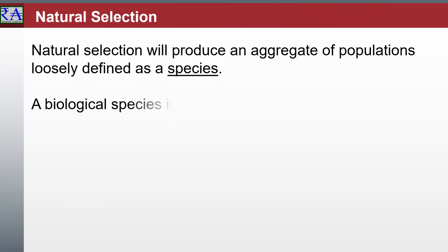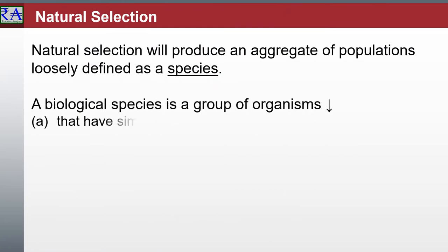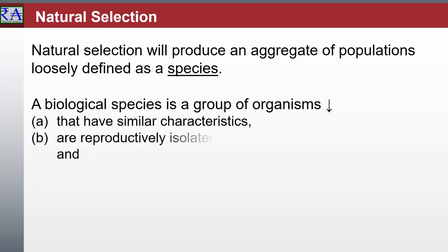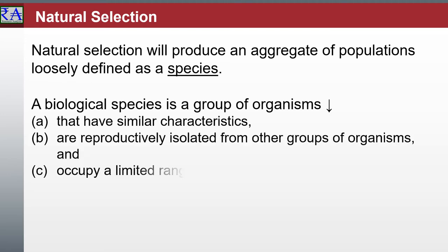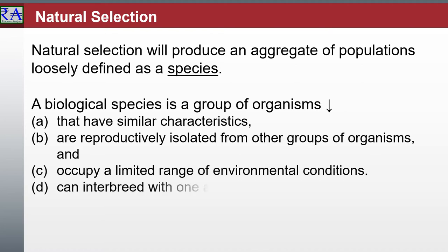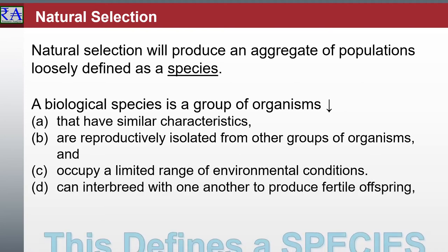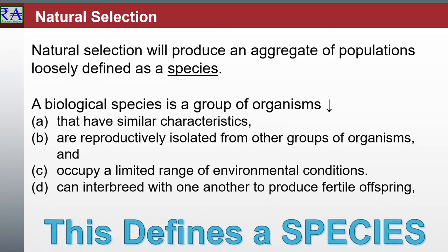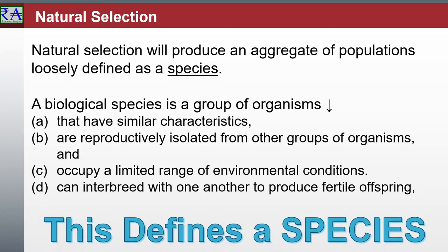The process in which one species gives rise to multiple species that exploit different features of the environment, such as food resources or habitats, is called adaptive radiation. The different features of the environment exert the selection pressures that push the population in various directions.